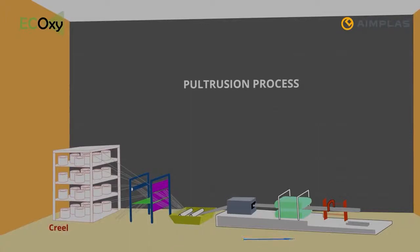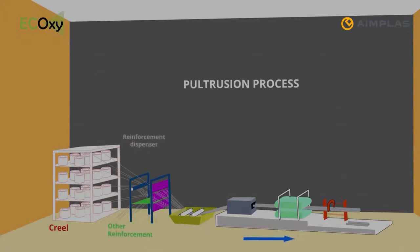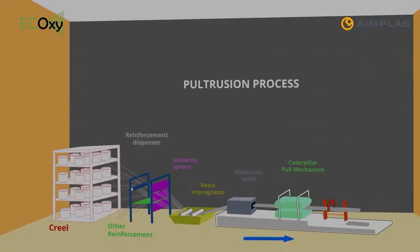The main parts of the pultrusion process are: reinforcement dispenser, resin impregnator, guidant system, pultrusion mold, caterpillar pull mechanism, and cutting device.